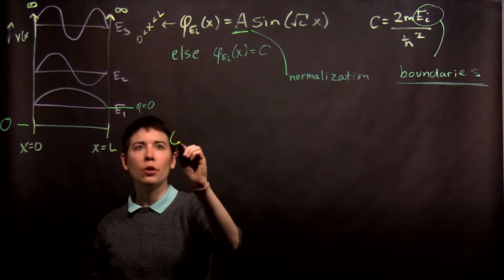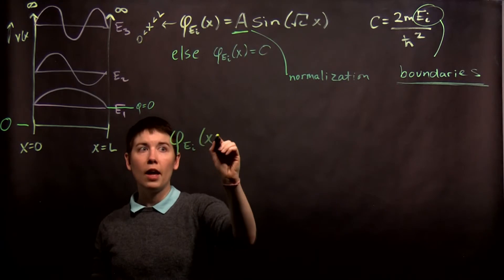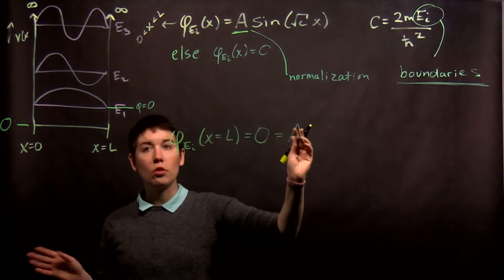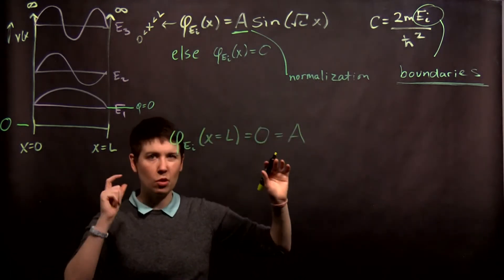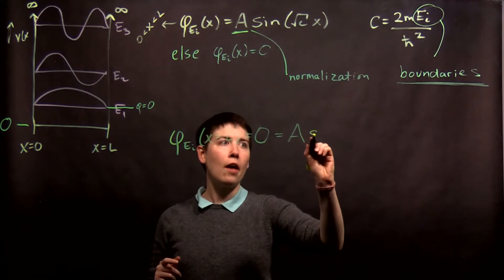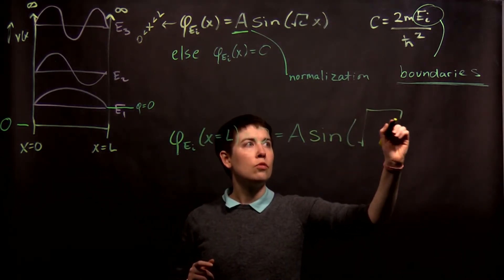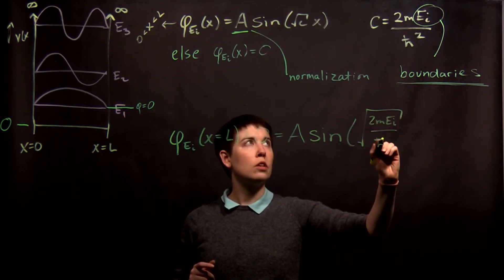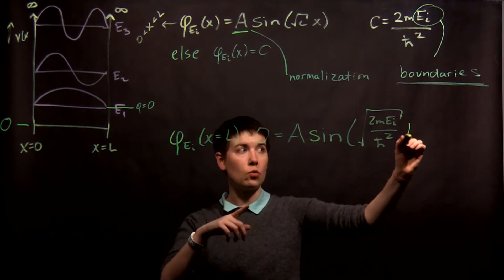So, what do we do? We say, well, when I have my wave function at x equals L, that has to equal zero. And so, that's going to be that normalization coefficient, which again, we find through integration, and we don't need to know exactly what it is for this. And then we have sine, and I'll write this out exactly actually, for square root of 2m e_i over h bar squared times x. Now, in this case, x is going to equal L.